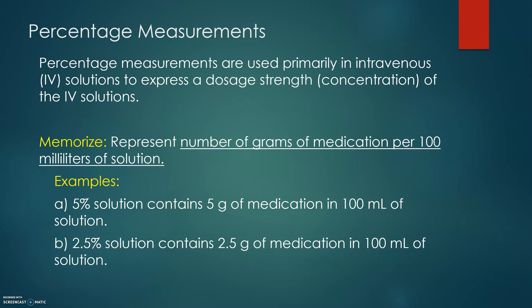The third measurement is percentage. Remember that percentage means out of 100. Percentage measurements are used in intravenous solutions to express dosage strength or concentration. We interpret percentages as grams of medication per 100 mL of solution. Example A: a 5% solution contains 5 g of medication in 100 mL, written as 5 g/100 mL. Example B: a 2.5% solution contains 2.5 g of medication in 100 mL, written as 2.5 g/100 mL.